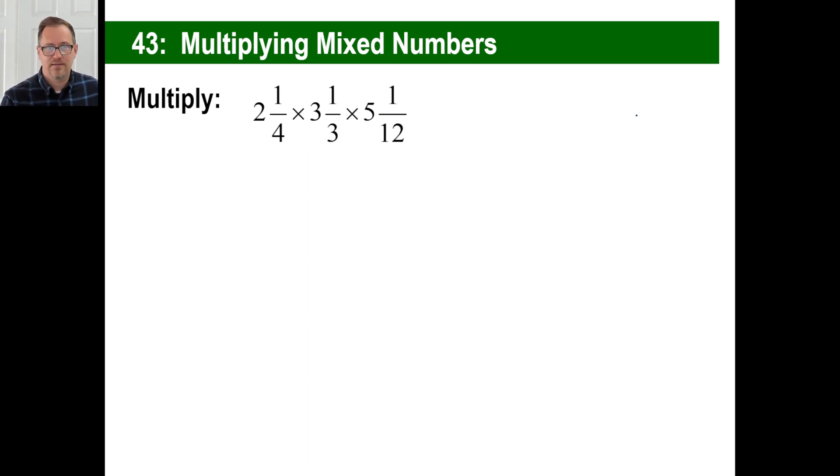Same thing here. Look at that monstrosity. Take all of these things and make them into improper fractions. Still, though, I'd go, okay, 2 times 3, that's 6. 6 times 5 is 30. Probably a little more than that because there's more fractional parts. So, I don't know, about 35 or something?